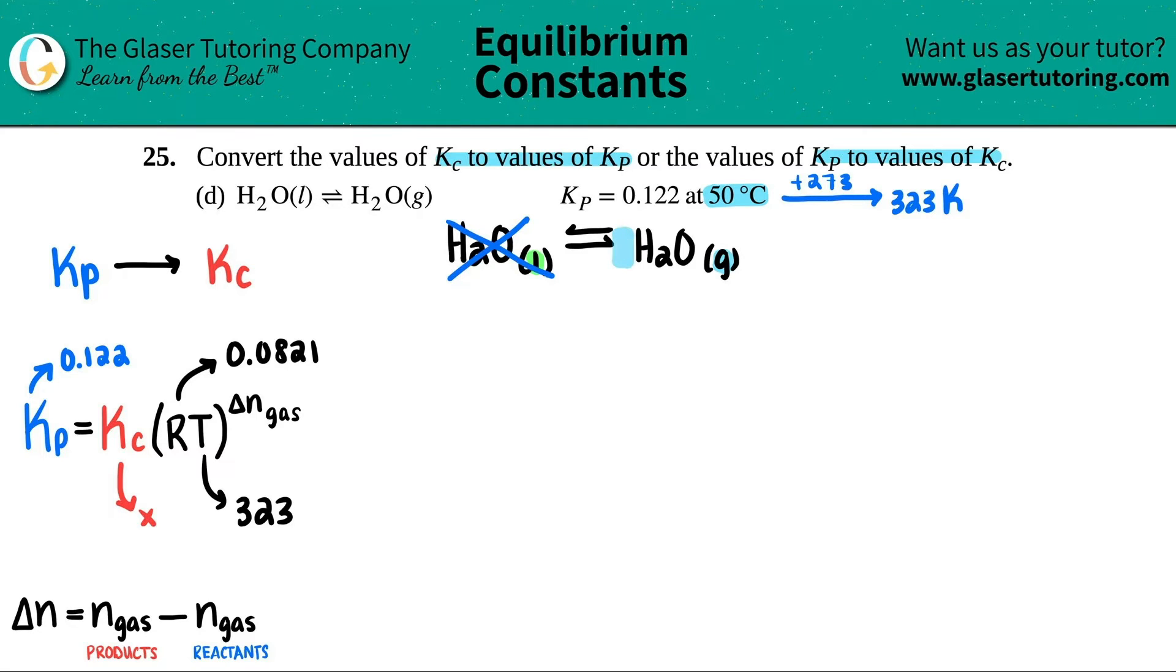But then I have a gas over here, right on the product side. Now let's just tally up how many moles of gas I have on both sides. I see that I don't have a number here. Remember, that just means one. So I have one mole for my whole product side. And since I have nothing on my left side, I have zero moles on my left side. So products minus reactants, one minus zero is one.